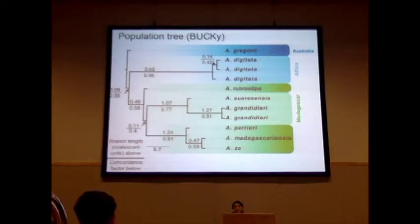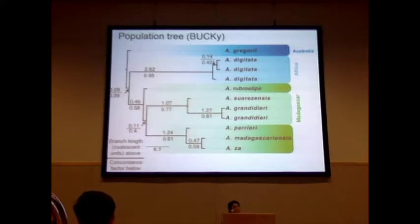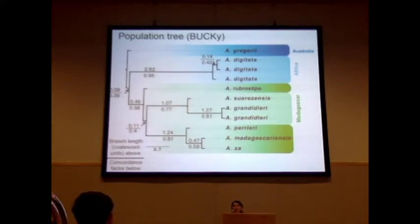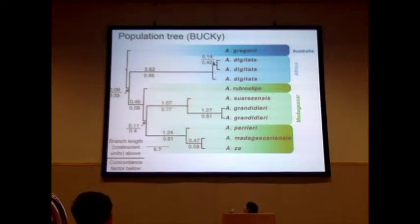This represents the dominant history of the taxa sampled, or otherwise thought of as the species tree. A couple of things I want to highlight: even with almost 300 loci, we were unable to resolve the relationship between the Australian species and the rest of the genus. The concordance factor for that node was insignificant.